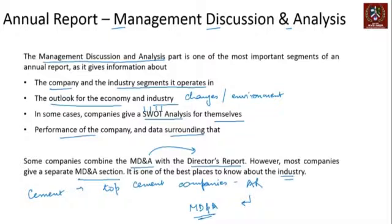That's an important place to find information about a particular industry or segment, and hence the MD&A becomes very important. Sometimes it also gives information relevant for gauging how the company will perform over a period of time. To understand the MD&A, we're going to use two different reports — we'll continue our work on the report of Asher Motors, and we'll also look at another company's annual report to understand what data is available in the MD&A segment.